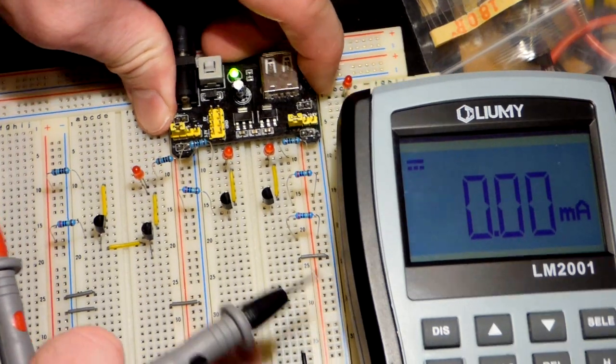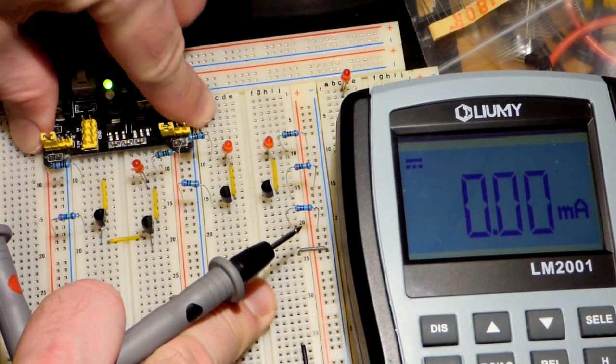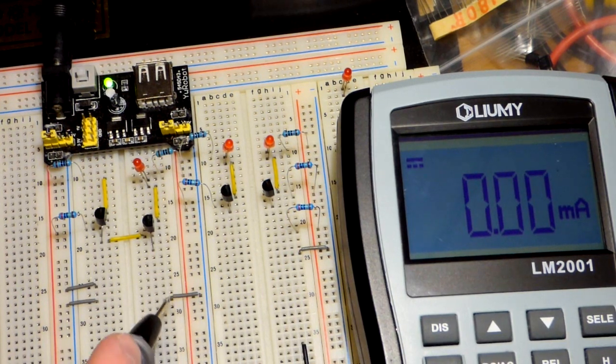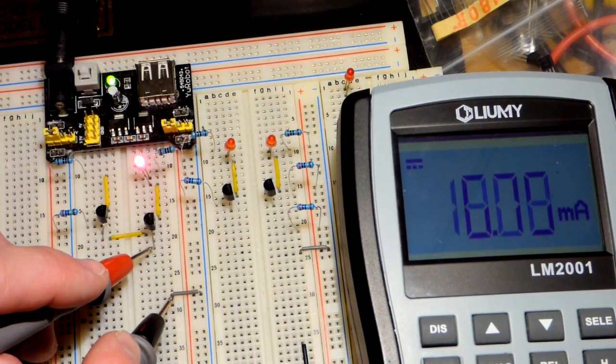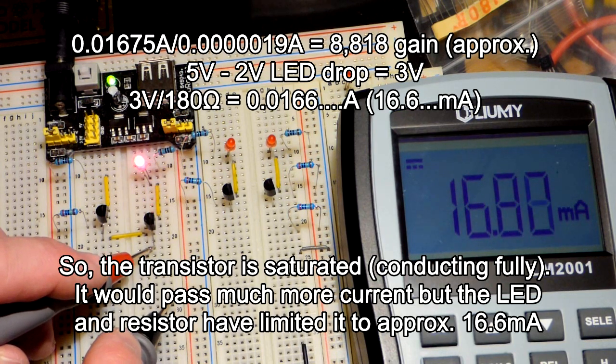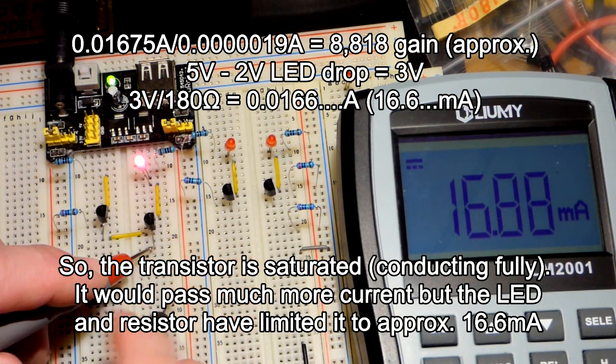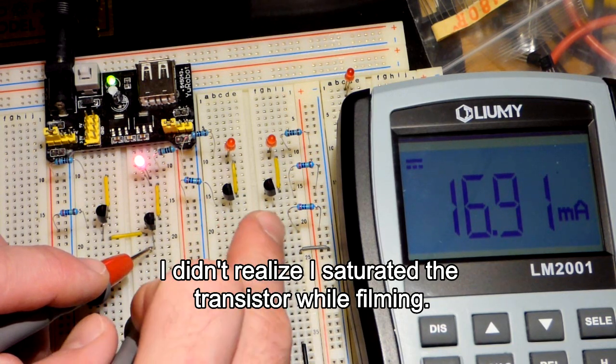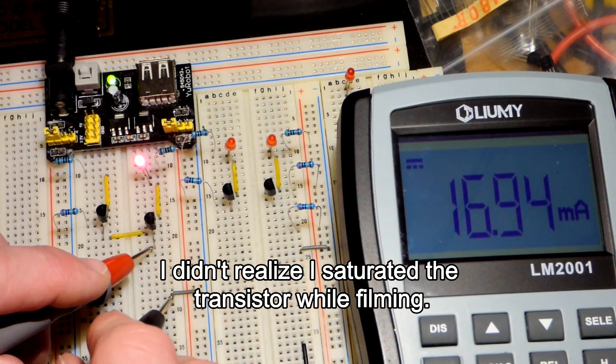And there we go. And I got to make sure I come down there. That's the ground to complete the circuit. And you can see it's slightly more for whatever reason than that one. Maybe we're getting a little bit more gain there. But in any case, it's still really close. What was that one? Like 13. And then this one's about 17 milliamps.